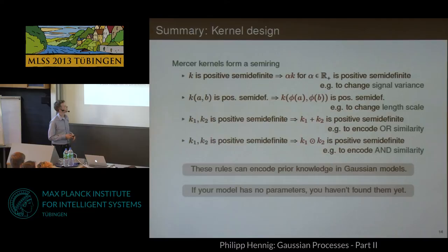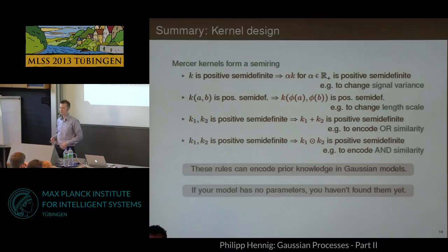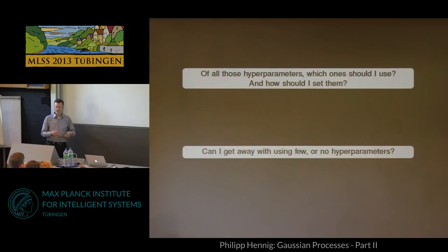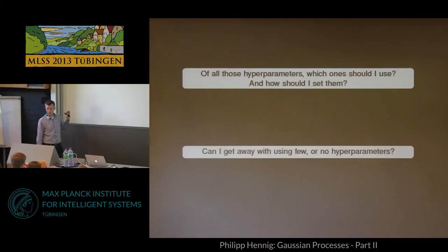This means you now have a huge amount of freedom to design your model. You need to think about all the scalars in front, all the length scales, all the other kernels you might add or multiply. Suddenly you're faced with a huge problem of choosing between all these models. We'd like algorithms that do this automatically, but so far we're not at that point yet. There was one paper at ICML 2013 where people tried to search this huge space of kernels, and there are some very interesting results.